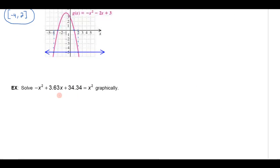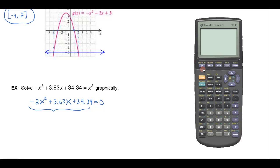It asks us to solve this equation graphically. Now if you wanted to solve it algebraically, we don't really have a good way to factor things that have decimals in it. So what I'm going to do is use the zero method. I'm going to get zero on one side, subtract x squared from both sides. That will give me negative 2x squared plus 3.63x plus 34.34 equals zero. Then I'm going to graph this and see where that graph equals zero. So I'm going to open my calculator here. And let's put in negative 2x squared plus the 3.63x plus the 34.34. And let's graph it on my standard window.